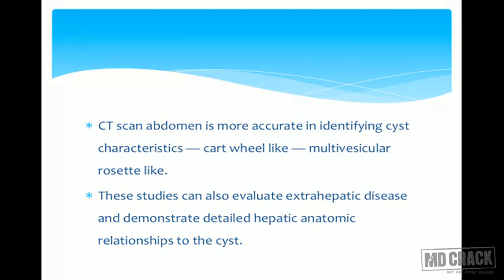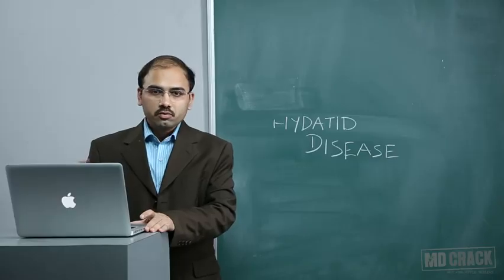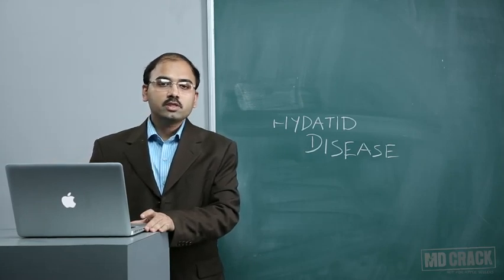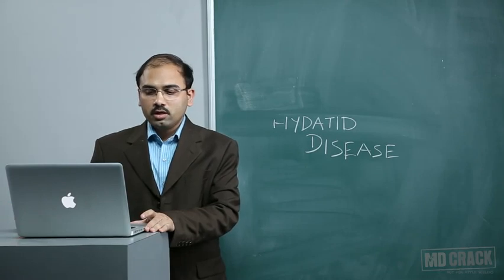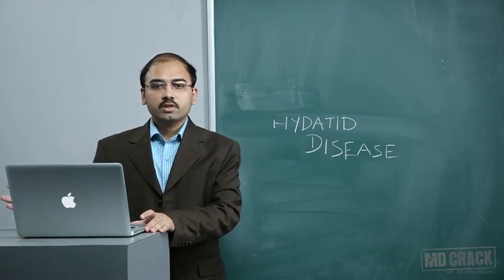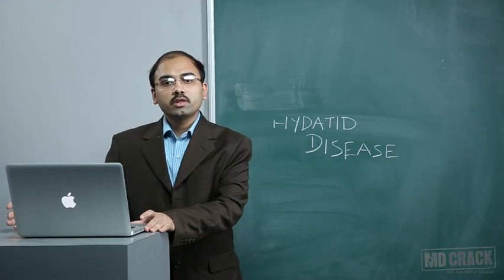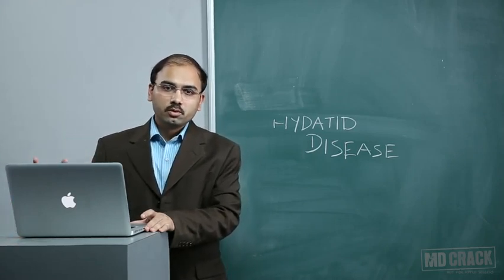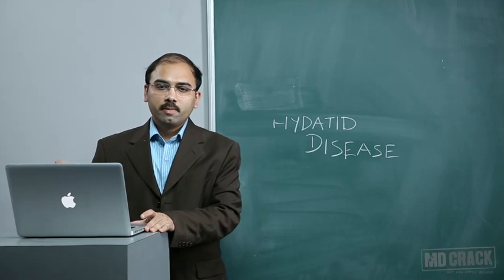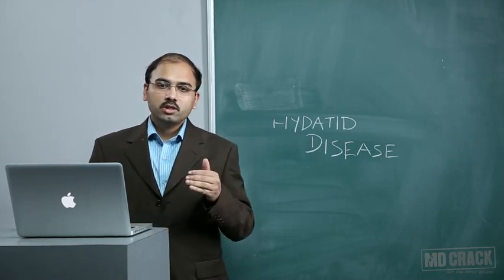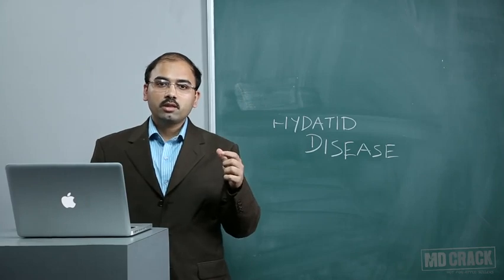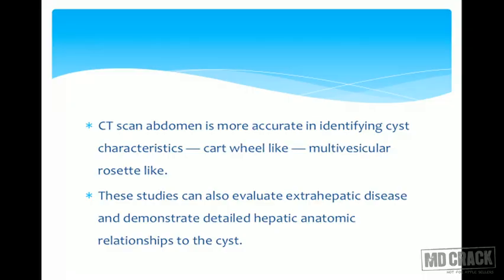CT scan of the abdomen is most accurate in identifying cyst characteristics such as cartwheel-like, multivesicular, or rosette-like patterns. If there is confusion on ultrasonography about cyst type, a CT scan can be used. CT also provides anatomical orientation with respect to biliary radicals, helping plan definitive surgery, and can evaluate extra-hepatic disease and detailed hepatic anatomical relationships with the cyst.